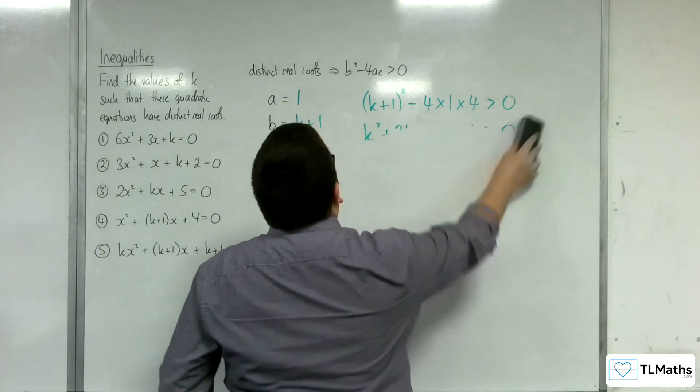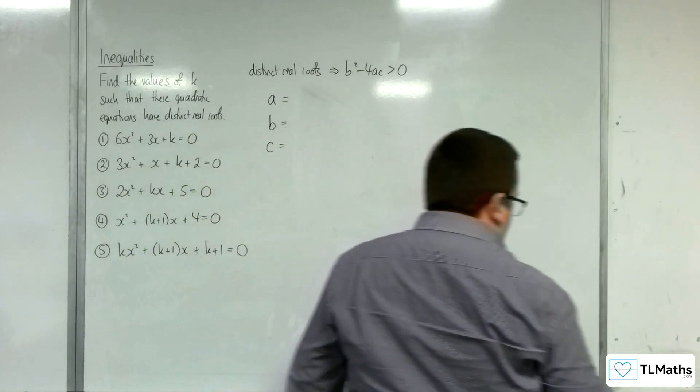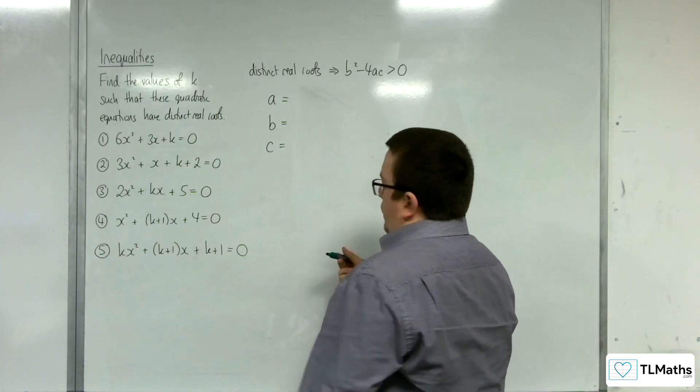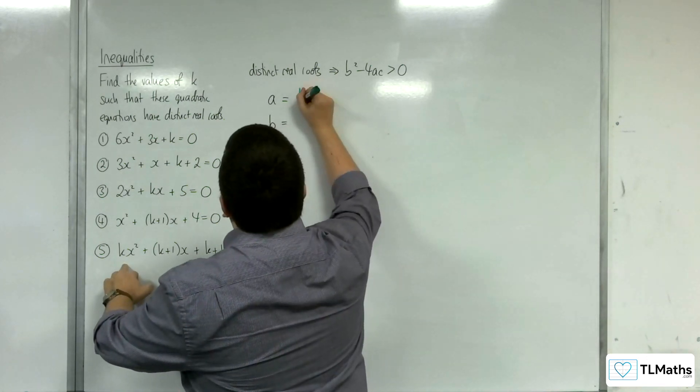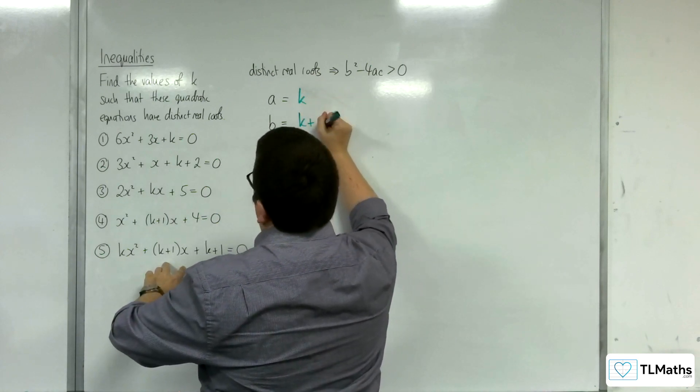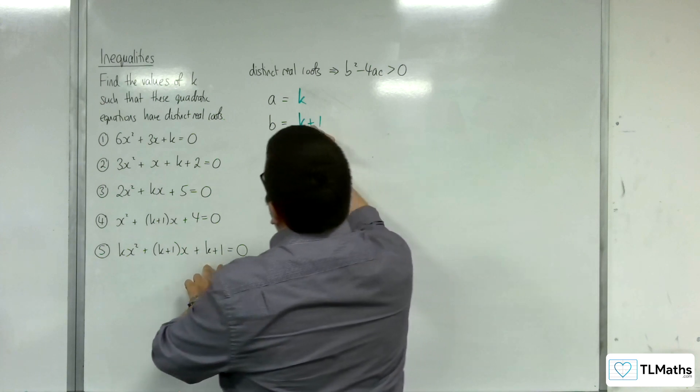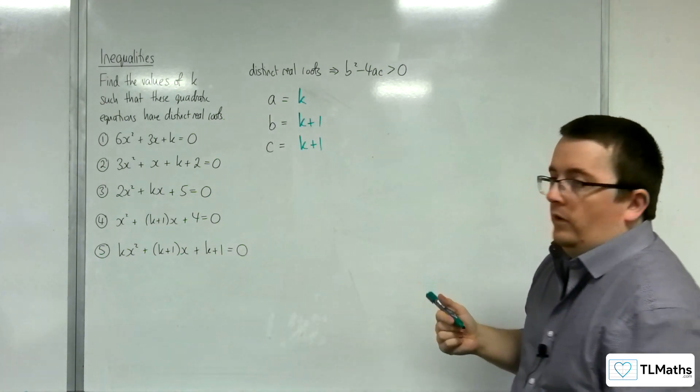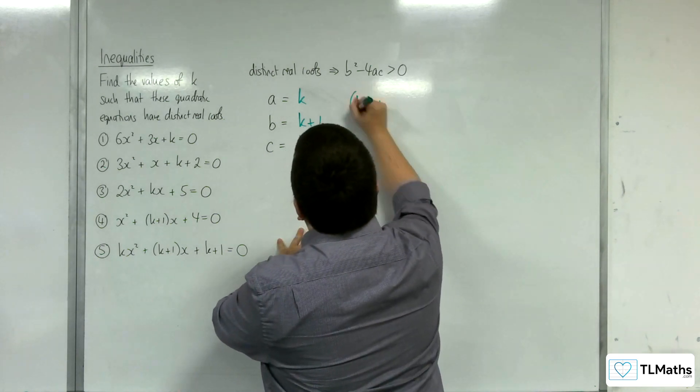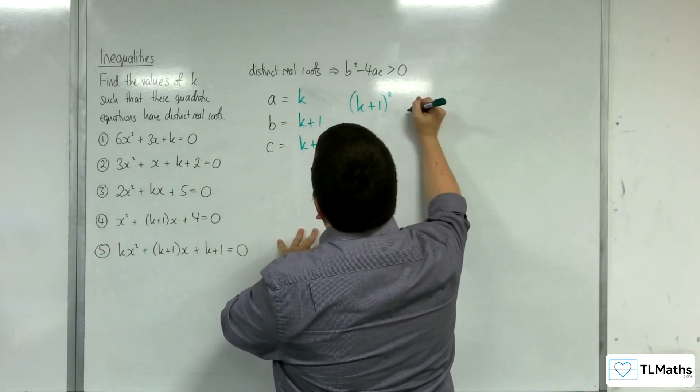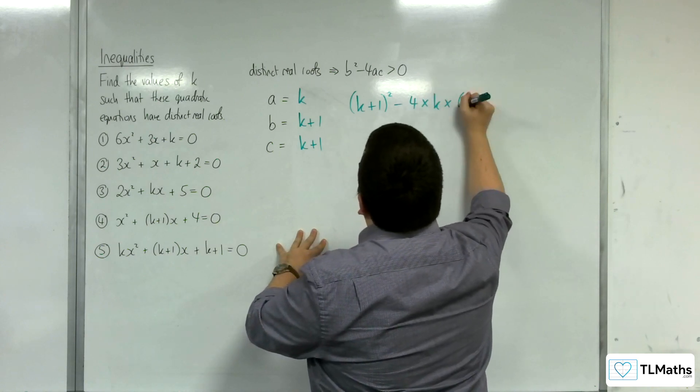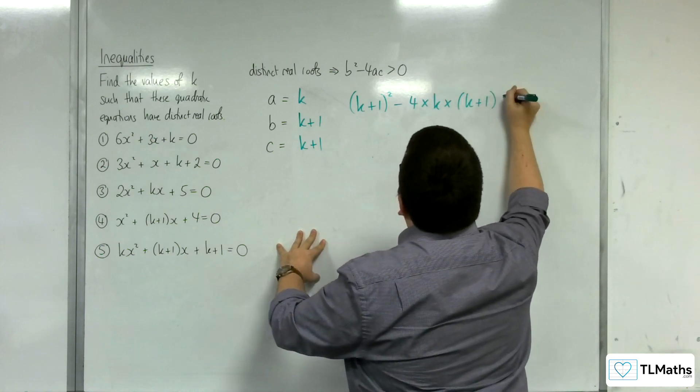We arrive at the last one, number 5. The coefficient of x squared here is k. The coefficient of x is k plus 1, and whatever's left over is k plus 1. I need to substitute into my formula. I've got k plus 1 squared. Take away 4 lots of k times k plus 1 is greater than 0.